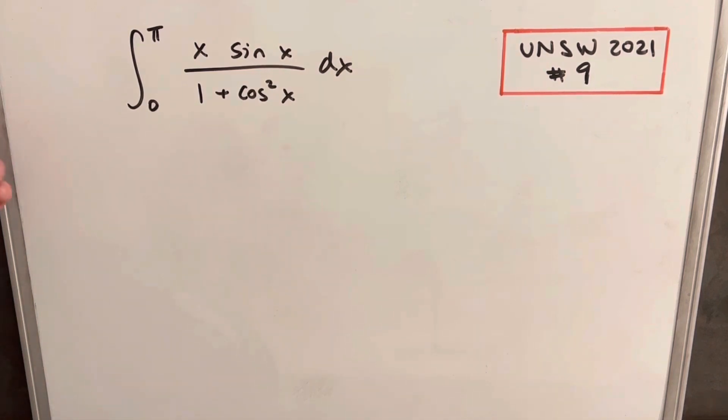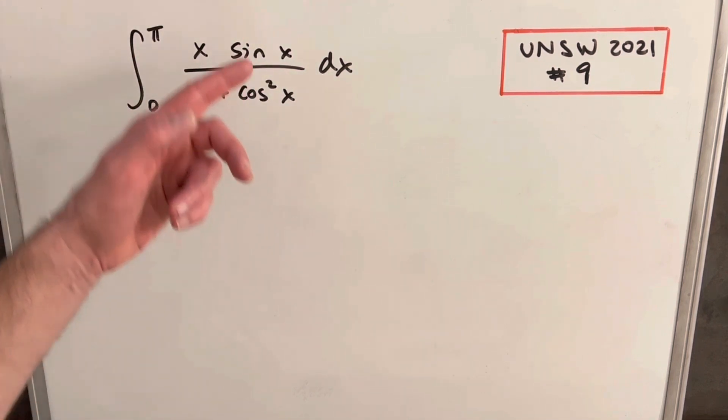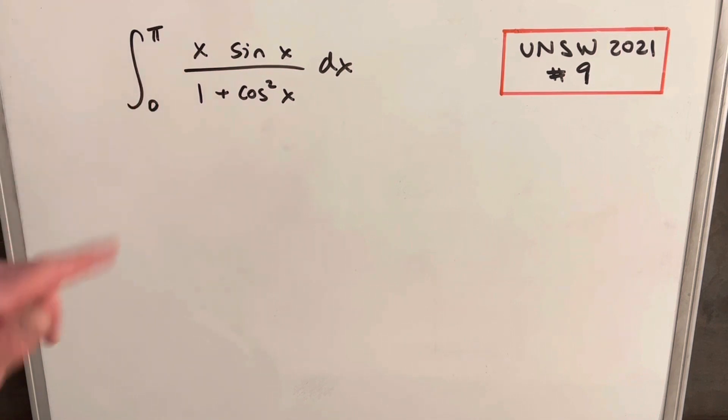I started by looking for a u substitution. It would be nice if we didn't have this x. Then it would work. We could do u in the denominator and then sine, but that x is in the way.